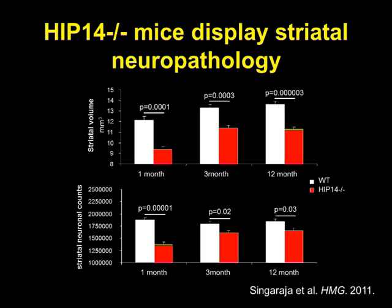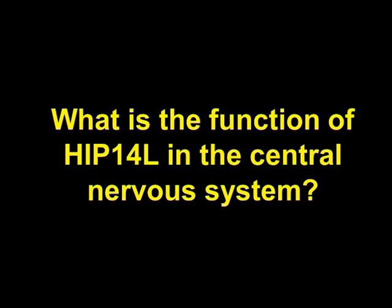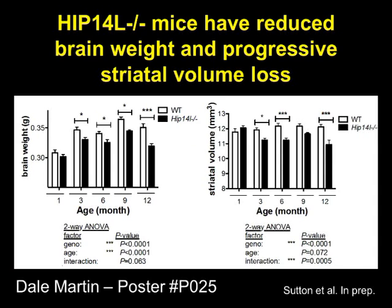What differs from Huntington disease is that these HIP-14 knockout mice show this pathology essentially from birth, early in development, whereas Huntington disease is a late onset disease. In contrast, when we look at HIP-14-like mice with targeted disruption, striatal volume is normal at one month, but over time striatal volume loss is progressive — very similar to Huntington disease — and associated with that, there is also striatal neuronal loss.